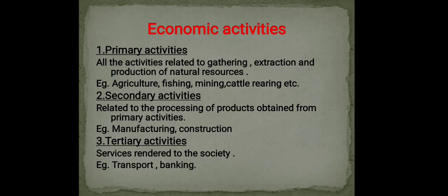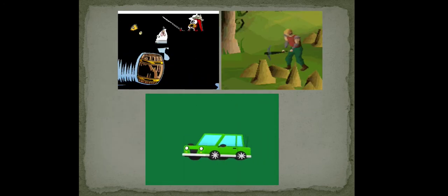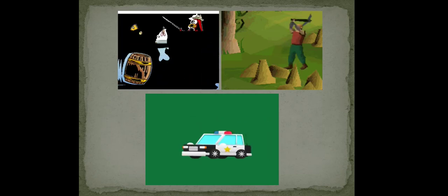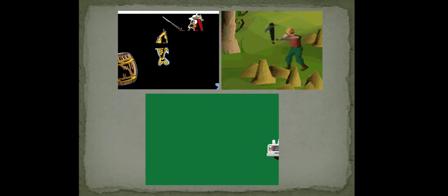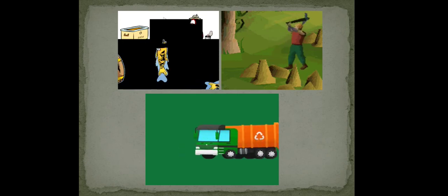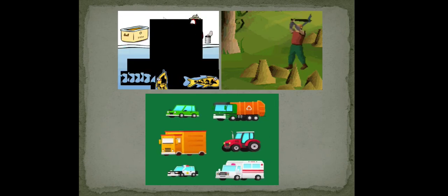Tertiary activities, also known as the service sector, provide services to the people of the country. Examples include transport, banking, and communication. Looking at some activity images: one person is doing fishing, another is cutting wood, and the third shows transport — a tertiary sector activity.